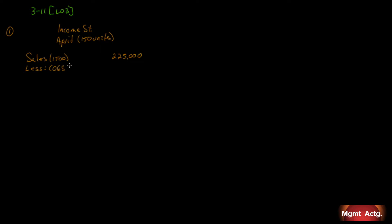Next is cost of goods sold. The cost is $900 per unit, and we sold 150, so we have $135,000 in cost of goods sold. That gives us $90,000, which is called the gross margin. Once we have that, we subtract SG&A — selling, general, and administrative expense. Let's start with selling expense and itemize each one, since some are fixed, some are variable, and some we have to calculate.